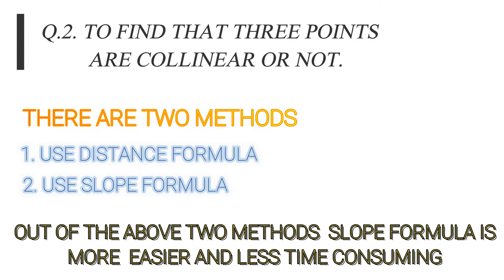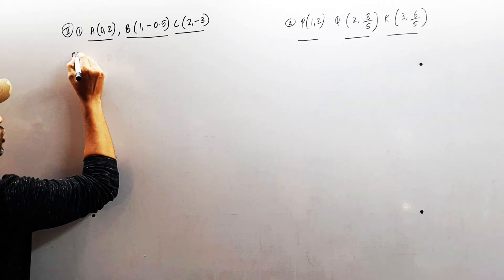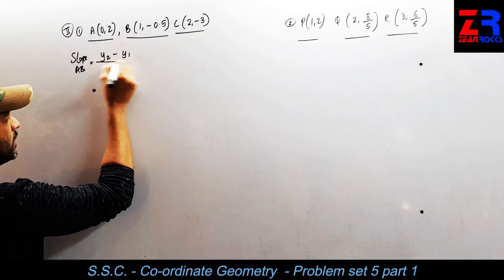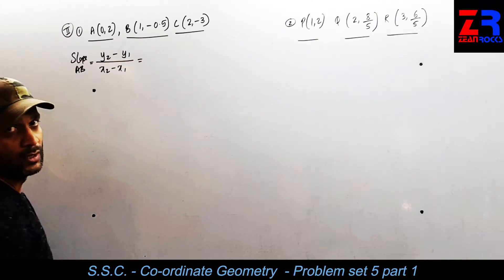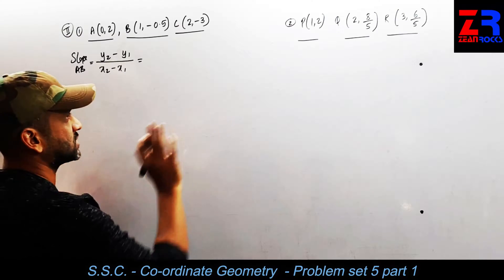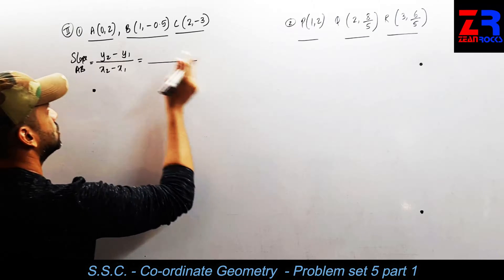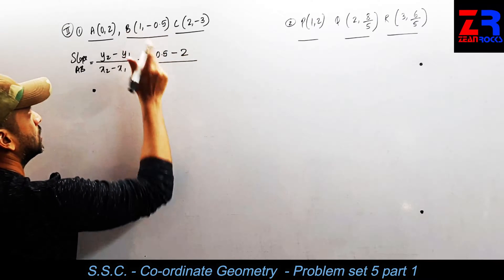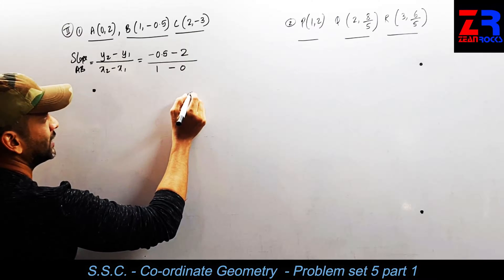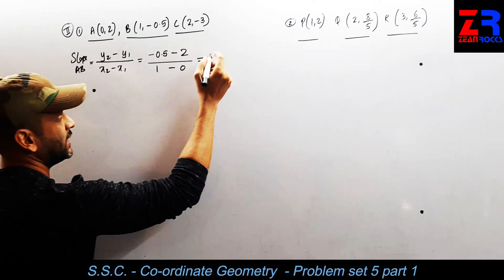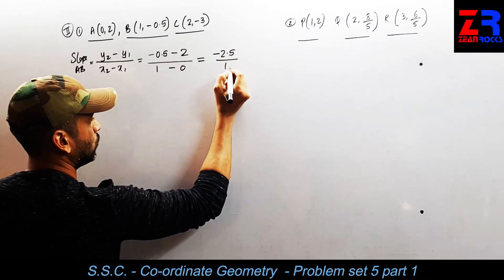From my point of view, the slope method is more comfortable. So I will write slope of AB. The formula is y2 minus y1 upon x2 minus x1 — that is second number minus second number upon first number minus first number. For AB, that is minus 0.5 minus 2 upon 1 minus 0, which equals minus 2.5 upon 1.